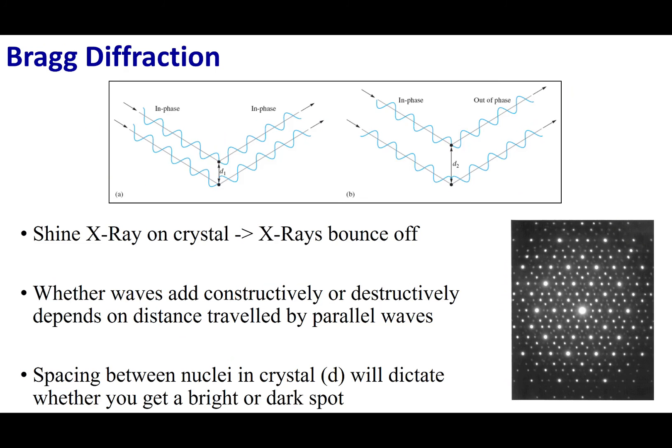To tell if a solid is crystalline or not, we're going to use x-ray diffraction. X-ray diffraction is a very powerful technique used to describe how a solid is put together. X-ray crystallography is going to use something called Bragg diffraction. Let's see what happens when we expose something to x-ray light.